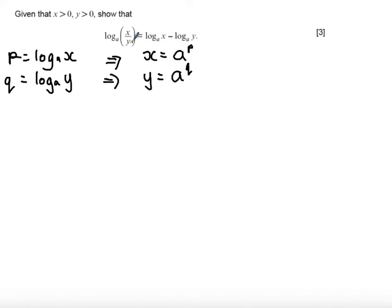Next step, I want to do x divided by y. So the next step is always given by what rule are we trying to prove here. We are trying to prove the quotient rule. So x divided by y is given as a to the power of p over a to the power of q. This means if I tidy this up using laws of indices, x over y is equal to a to the power of p minus q.